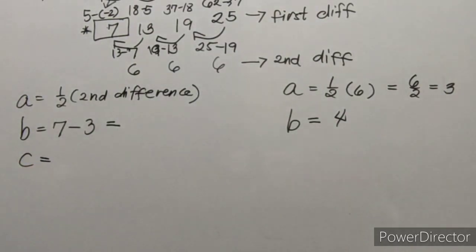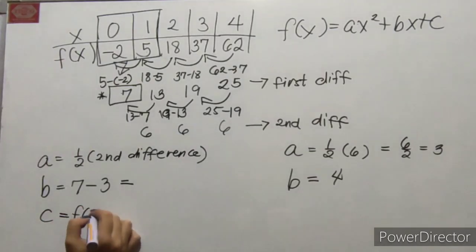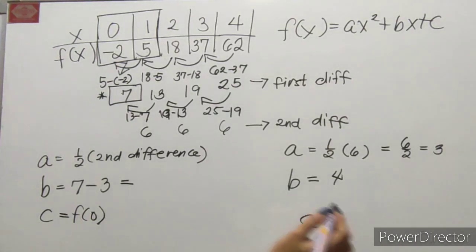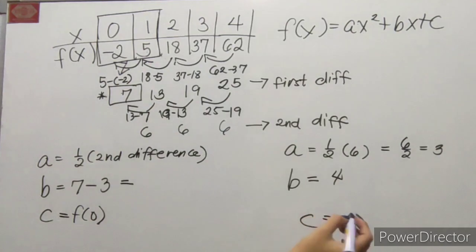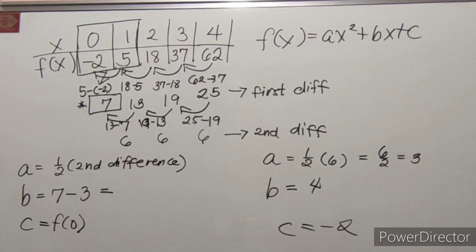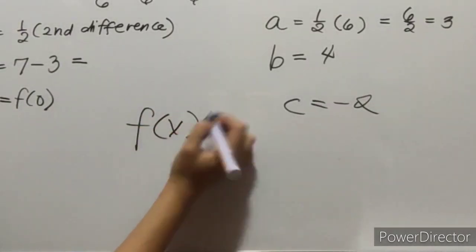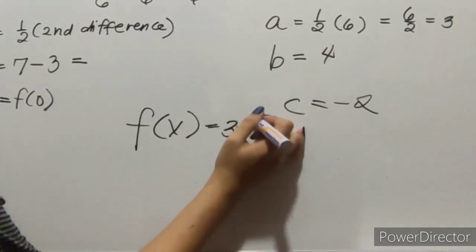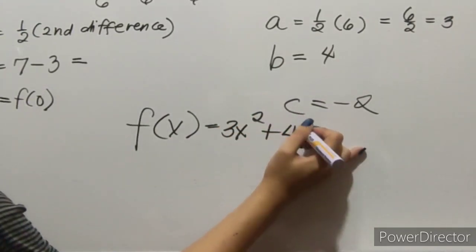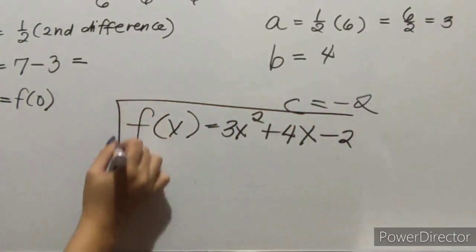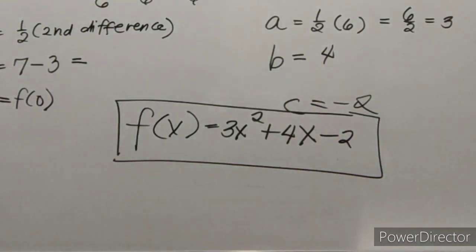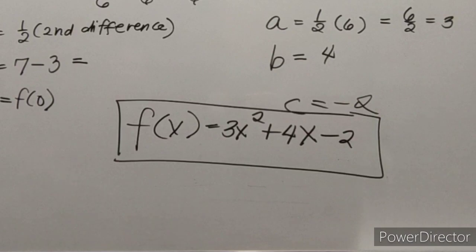C is kung ano lang yung katapat ng 0. So, 0 yung x and then, ano yung nasa ilalim nila na f of x — kumbaga parang f of 0. So, nabi yung 0 and then yung nasa baba ng negative 2. That is how you will get the value of A, B, and C and then isa-substitute na lang natin. So, our final answer is f of x equals 3x squared plus 4x minus 2. This is our quadratic function given that table.